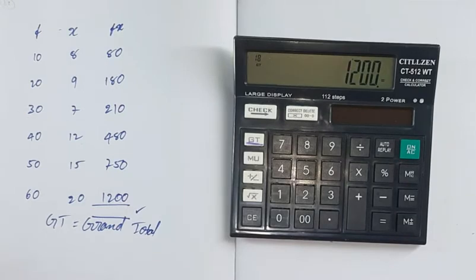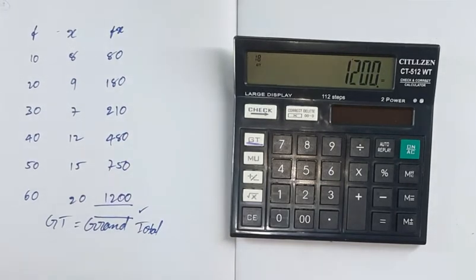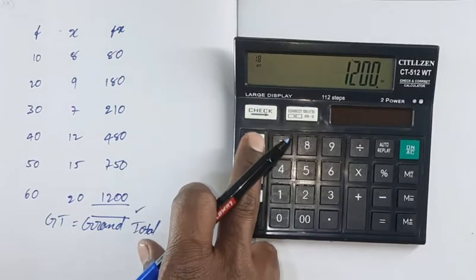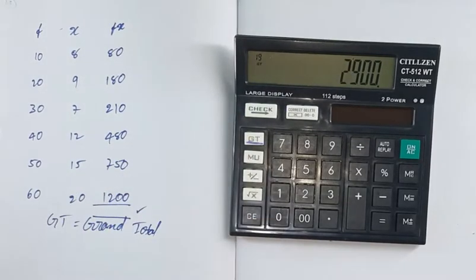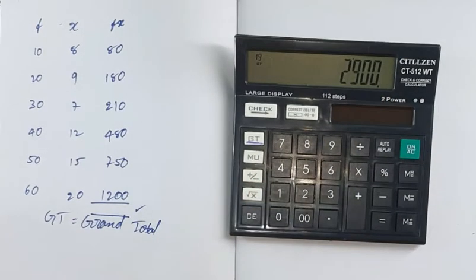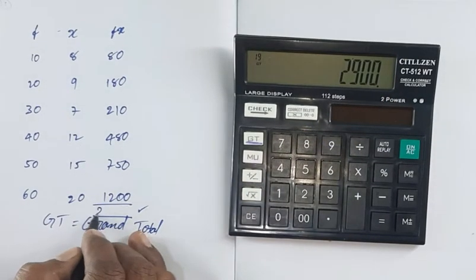So, the total amount is the multiplication. I will multiply the calculation. I will give it a GT press. What is the GT press? Now, we choose the grand total. I will check the grand total. It is 2,900.